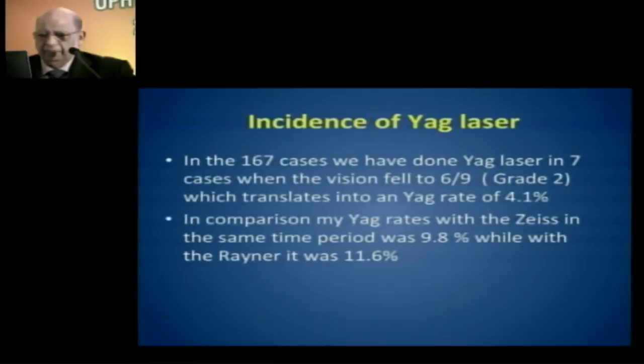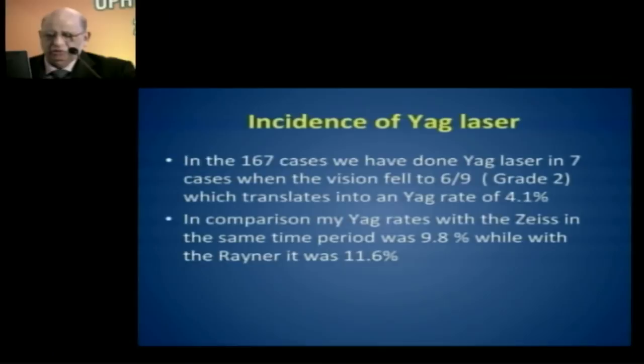In comparison, Zeiss at the same time period had a YAG rate of 9.8%, while the Rayner lens was 11.6%. The Hoya lens is literally half the regular YAG rates of the others.